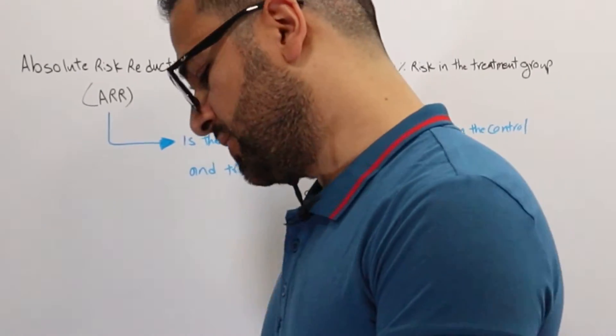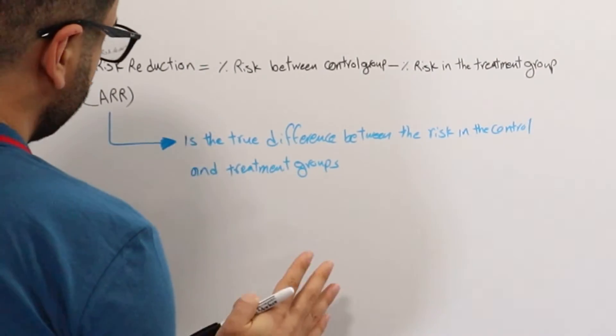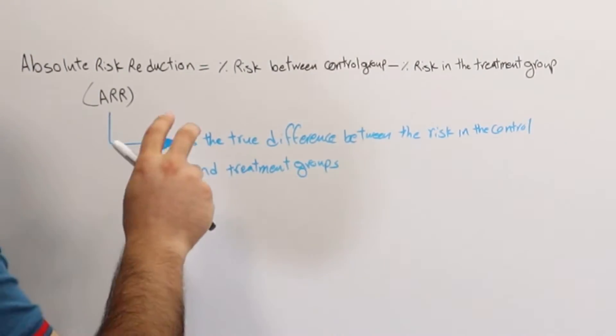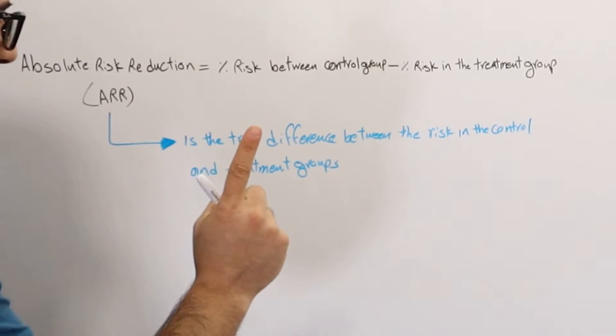So what is number needed to treat? Usually in a study they want to find out how many patients need to receive the intervention, the new treatment, in order for one patient to benefit.